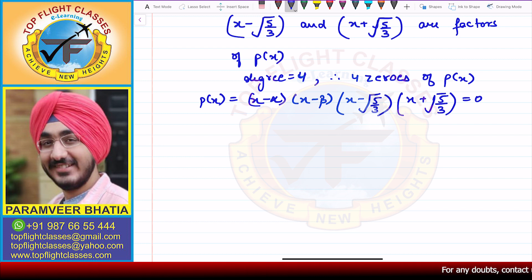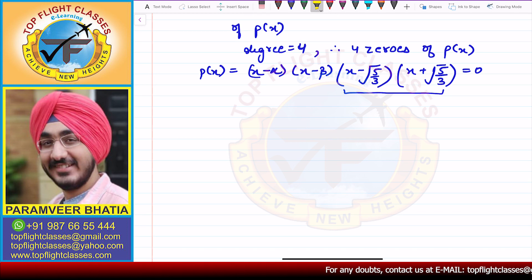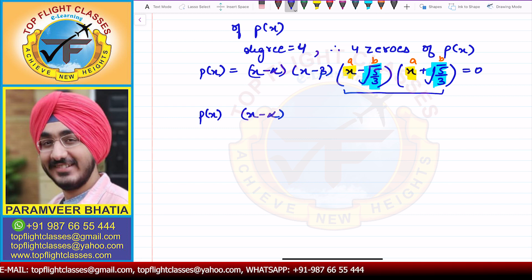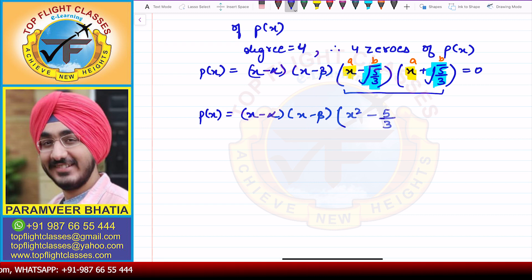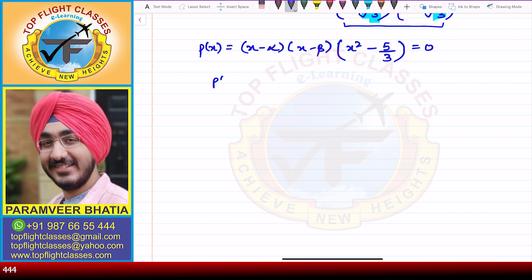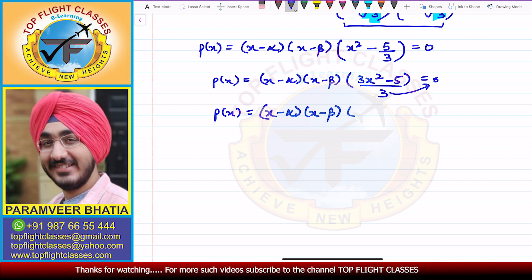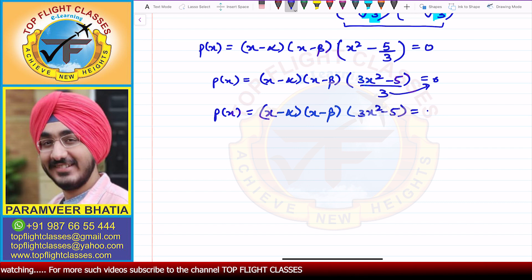From here, you can clearly see that (x - √(5/3)) and (x + √(5/3)) are of the form (a - b)(a + b). So p(x) = (x - α)(x - β) · (x² - 5/3). Taking LCM, p(x) = (x - α)(x - β) · (3x² - 5)/3, and then taking the 3 over: p(x) = (x - α)(x - β)(3x² - 5).